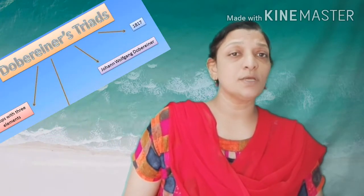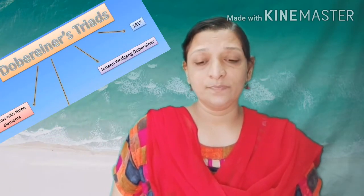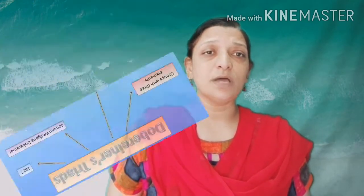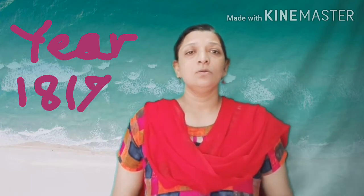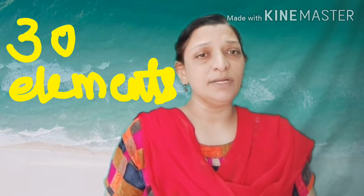Today we are going to discuss Dobereiner's Triad. Dobereiner was a German scientist who, in 1817, knew about 30 elements. During that period, he considered groups of elements based on their property of atomic mass.